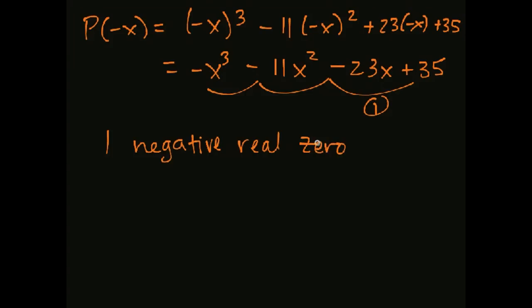Now can we have less than that by an even whole number? Well, no, because when I take one minus two, I get negative one. Minus four, I get negative three. So that doesn't make sense. I can't have a negative number of negative real zeros. Remember, this is the number of them. So what does that mean? The first thing I found was that, for this example, negative one was a real zero. So that means it's the only one.